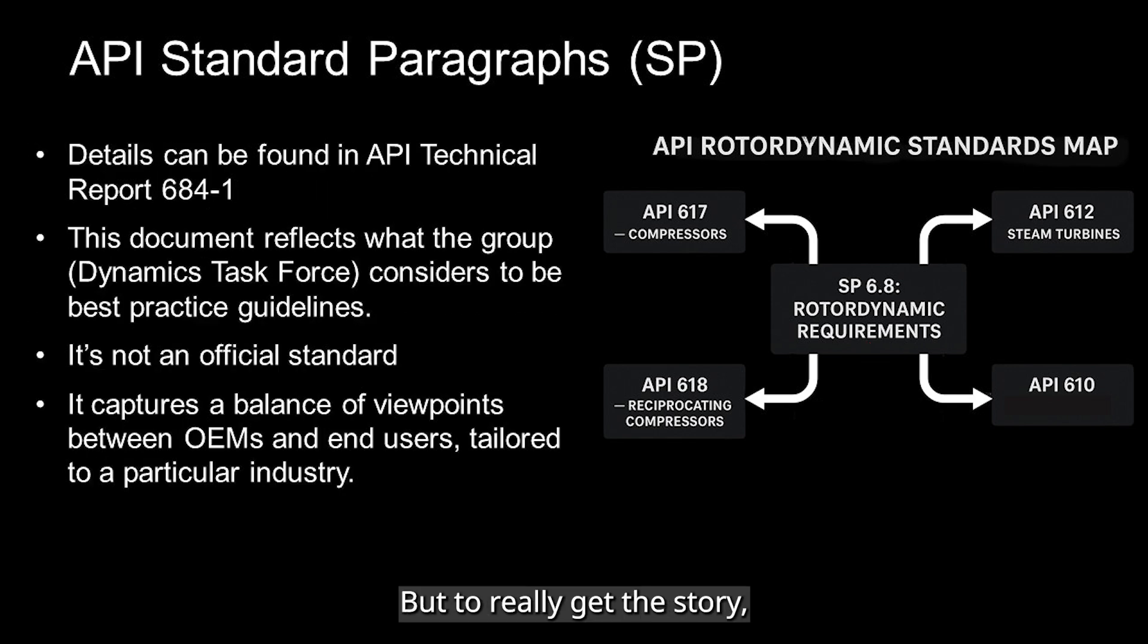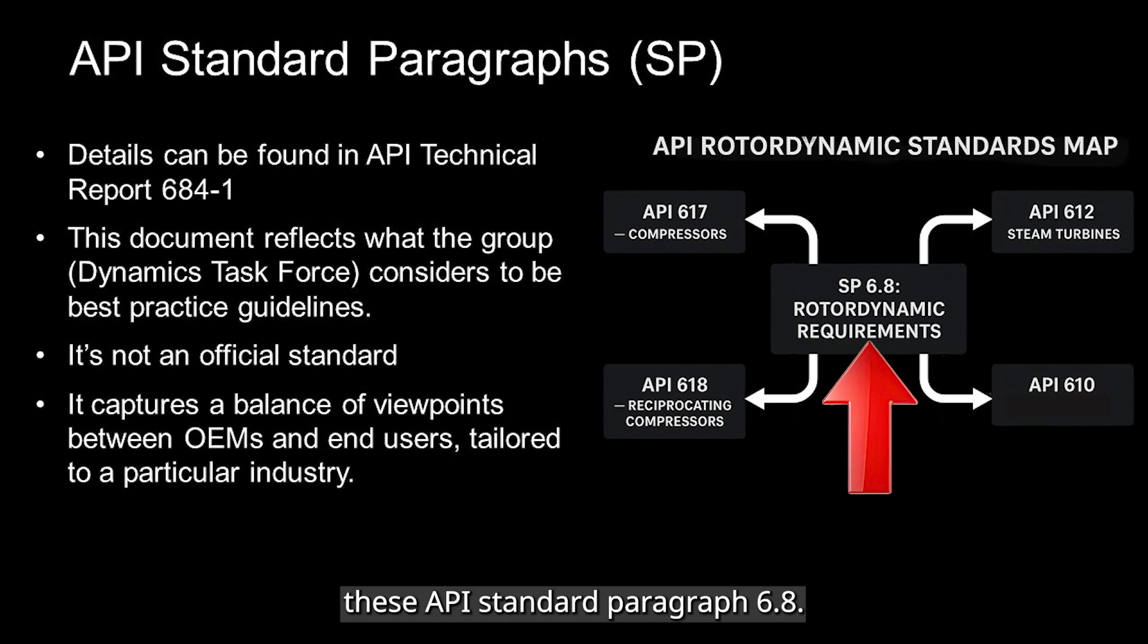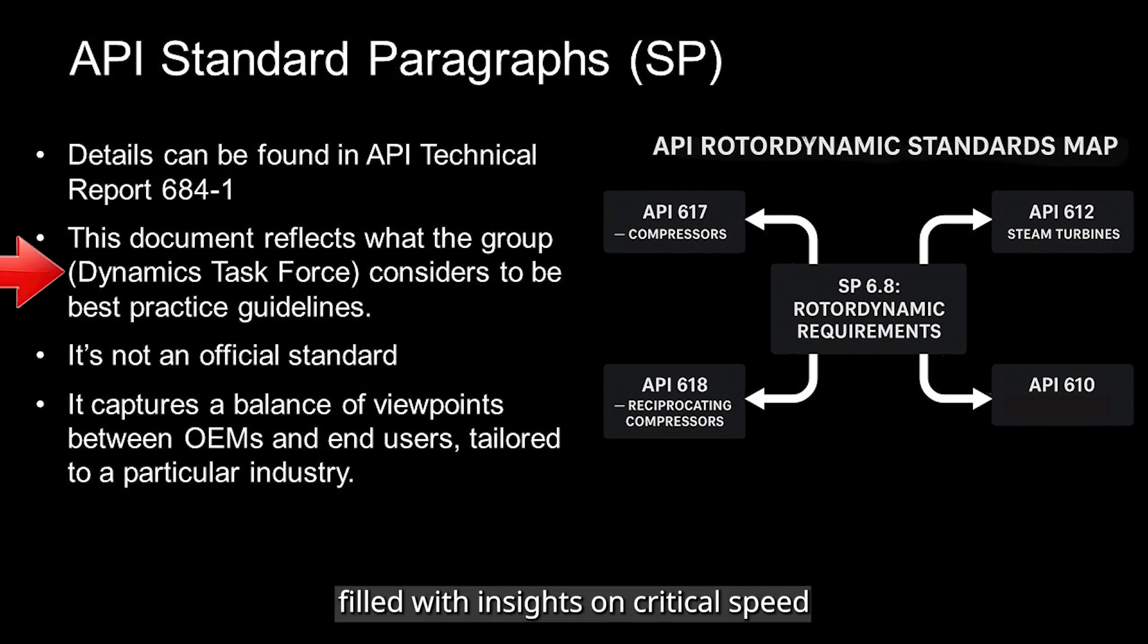But to really get the story, we should look into API technical report 684. API technical report 684 is a tutorial that describes, discusses, and clarifies these API standard paragraphs 6.8. The technical report 684 is a 538 page long tutorial written by the best in the business, filled with insights on critical speed and imbalanced response and stability.